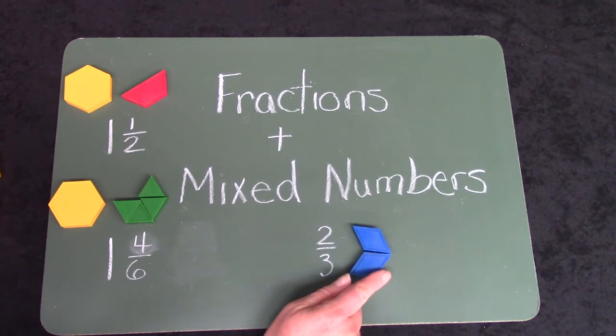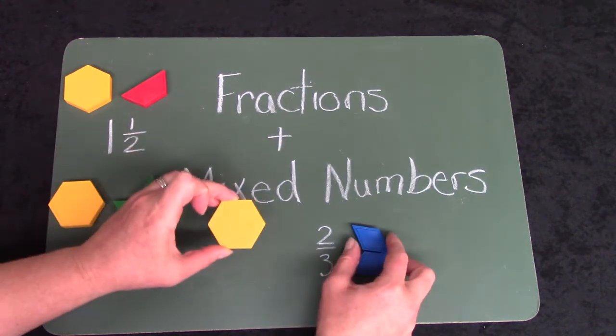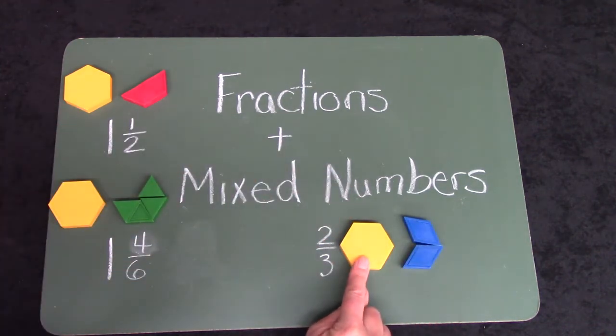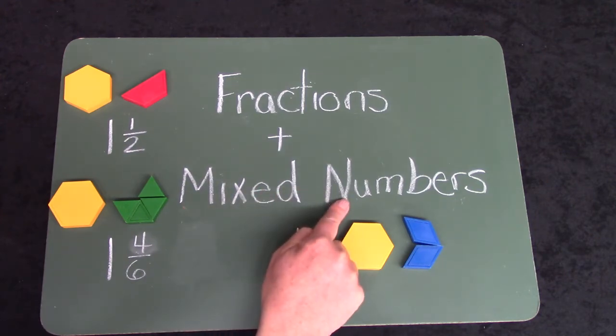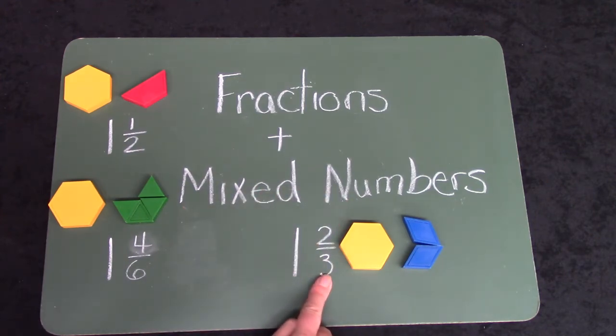Over here I have two thirds of a hexagon. What if I have another one? If I have one hexagon and two thirds, it would be one and two thirds hexagons. A mixed number is when we have a fraction and a whole number.